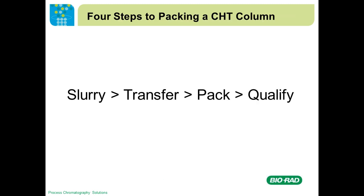There are only four steps to packing a CHT column: you make the slurry, transfer the slurry into the column, pack, and then qualify — much like all other resins.